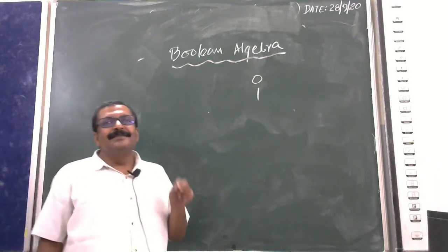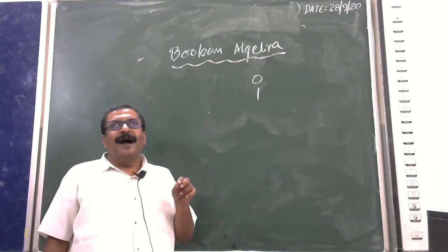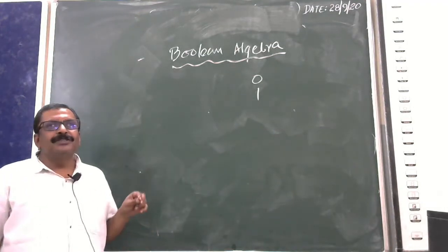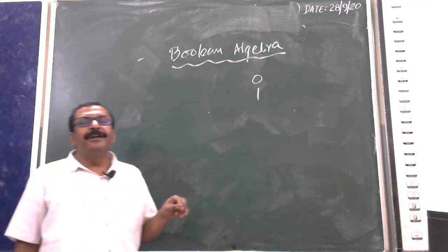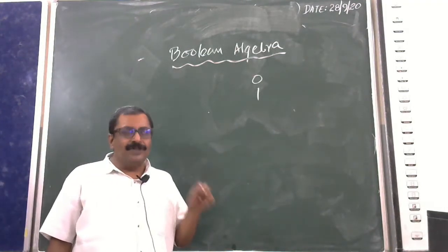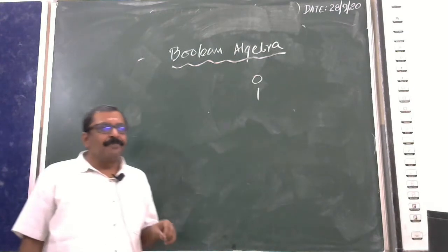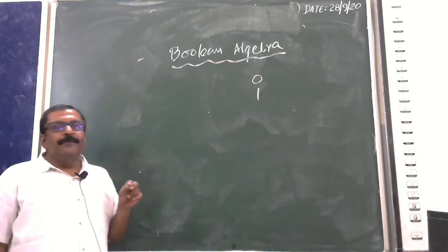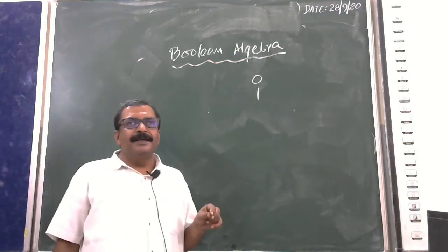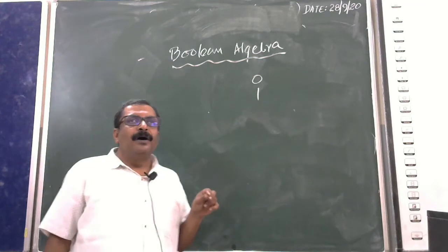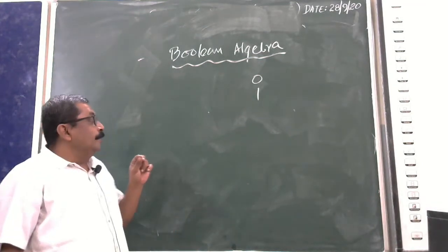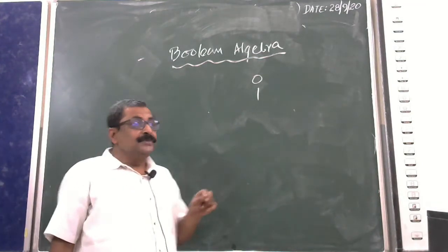Circuits — made from transistors, chips, etc. — are built from combinations of infinite types of logic gates. Today we will discuss the three basic gates in circuit diagram context.